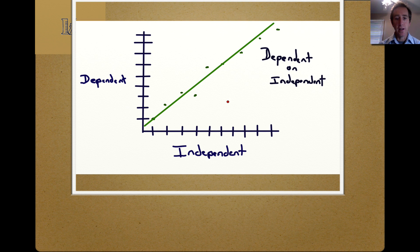So to review, the independent variable goes along the x-axis. The dependent variable goes on the y-axis. Our title has dependent on independent. We use lines and we use the best fit line. We want to make our graph as large as possible in the space provided.